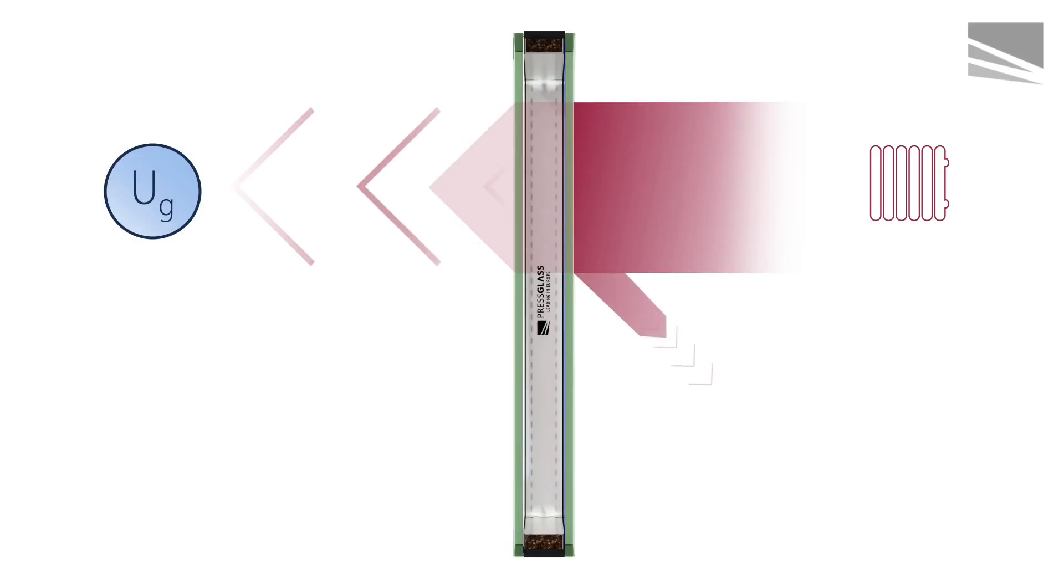The UG indicator indicates precisely how much heat is lost through one square meter of glass under specific conditions. The lower the ratio, the less heat loss.